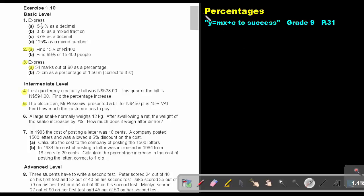Part 25. We are going to look at mixed examples of percentages. You will find this on page 31 in the Namibia Mathematics Grade 9 textbook, Y equals MX plus C to success. I want you to do the following examples: 2a, 3a, 4, and 5. But before you start doing it, I just want to take you back to the Grade 8 summary.